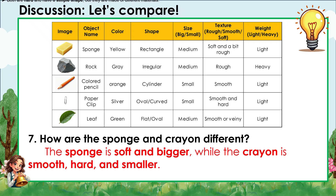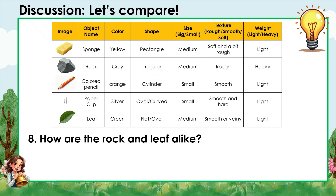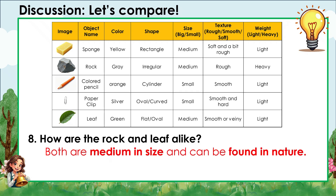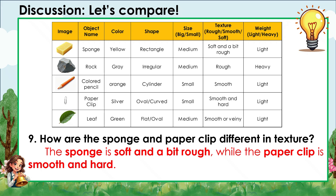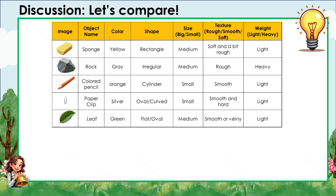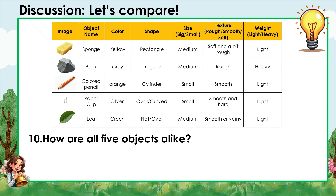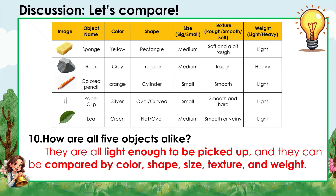Question 7: How are the sponge and crayon different? The sponge is soft and bigger, while the crayon is smooth, hard, and smaller. Question 8: How are the rock and leaf alike? Both are medium in size and can be found in nature. Question 9: How are the sponge and paper clip different in texture? The sponge is soft and a bit rough, while the paper clip is smooth and hard. Question 10: How are all five objects alike? They are all light enough to be picked up, and they can be compared by color, shape, size, texture, and weight.